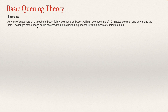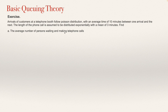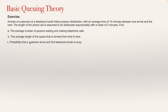The length of the phone call is assumed to be distributed exponentially with a mean of three minutes. Find: (a) the average number of persons waiting and making telephone calls, (b) the average length of the queue that is formed from time to time, (c) the probability that the customer arrives and finds the telephone booth is busy, and (d) the probability that the customer arrives and finds that the telephone booth is empty.